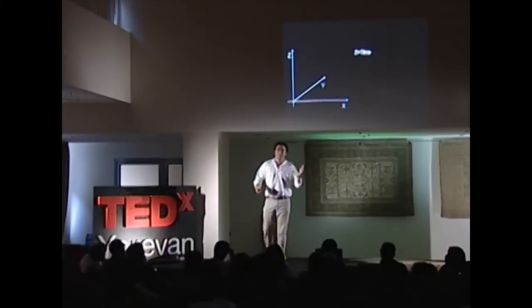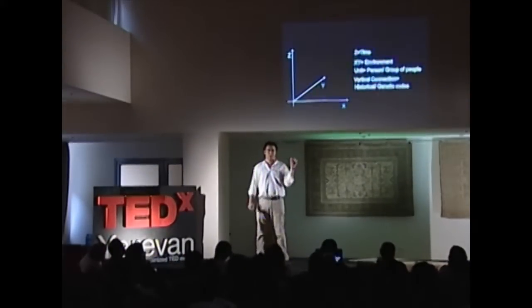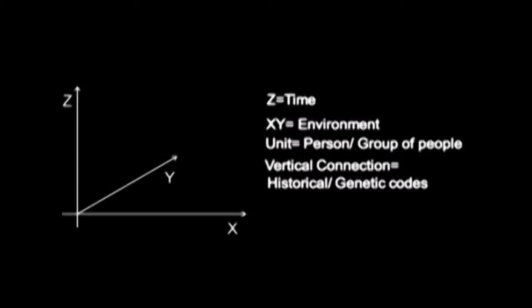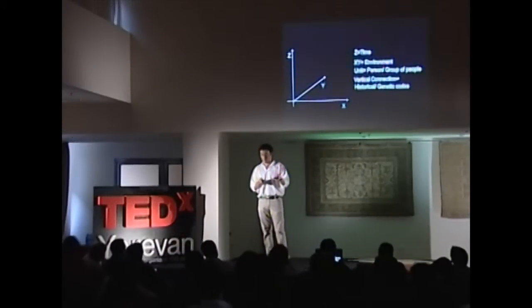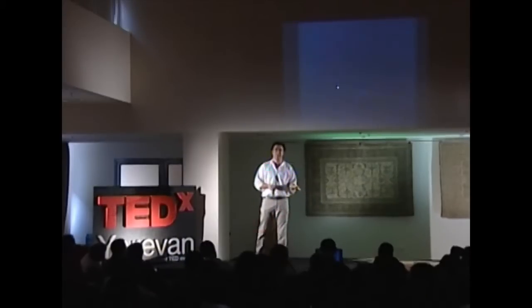There's lots of information every day coming to us and we are in the middle of that, and we don't have time to go through all of it. So we built a model — a very simple three-dimensional model where Z is time, X and Y are environment, the unit is a person or group of people, and the vertical connections are the historical or genetic codes. We put Armenian national history inside this system, and you will be able to see how we generate that. It starts from the 2nd–3rd millennium before Christ, and this is the world map. The three blue points are the lakes to show the location.